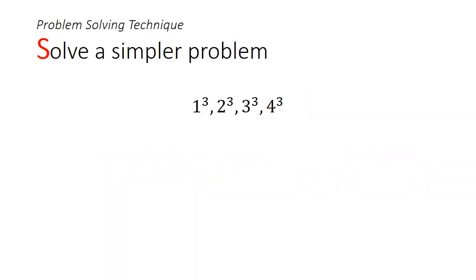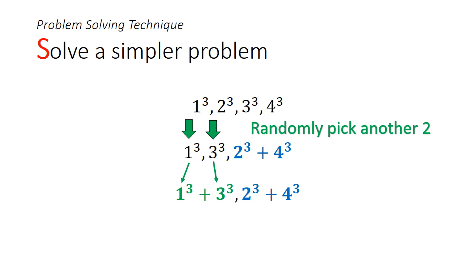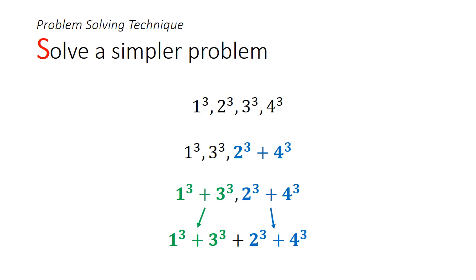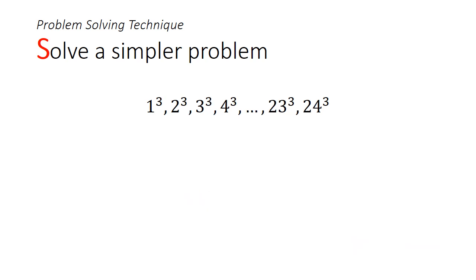So the trick to this is to try to solve a simpler problem, to see if we can spot a pattern. Let's say we only have 4 cubic numbers instead. If I were to randomly pick, say, 2³ and 4³, the new sequence would be 1³, 3³, 2³ plus 4³. Let's pick 2 more cubes. Let's say I pick 1³ and 3³. This will give me 2 terms left. If I run the algorithm one more time, I'm just getting the sum of cubes from 1 to 4. So, it turns out that this entire question is just a long convoluted scam. It's just here to ask us to add up the sum of cubes from 1 to 24.